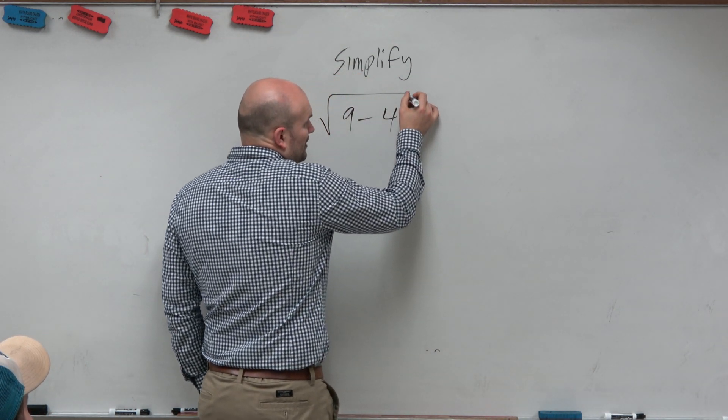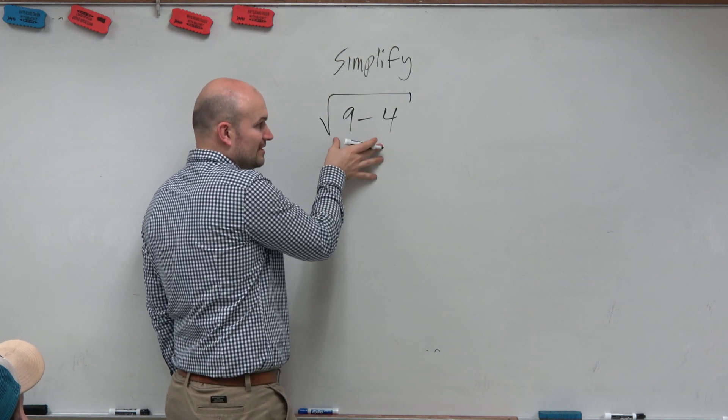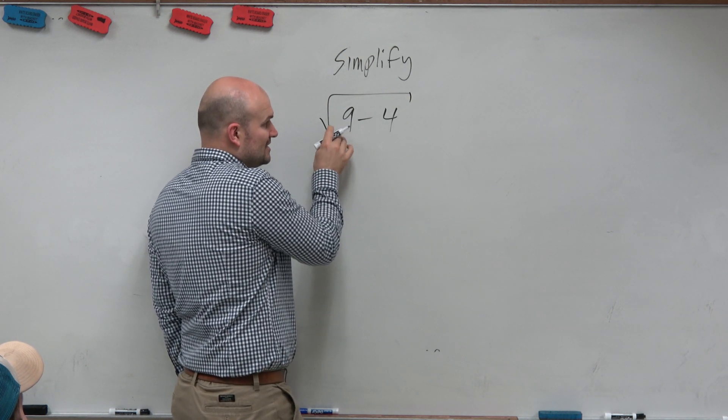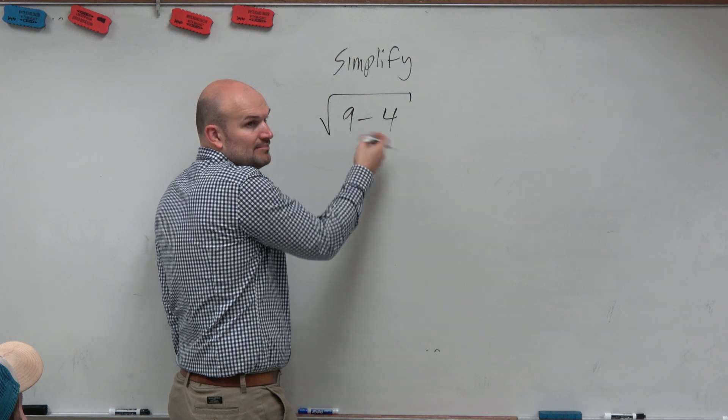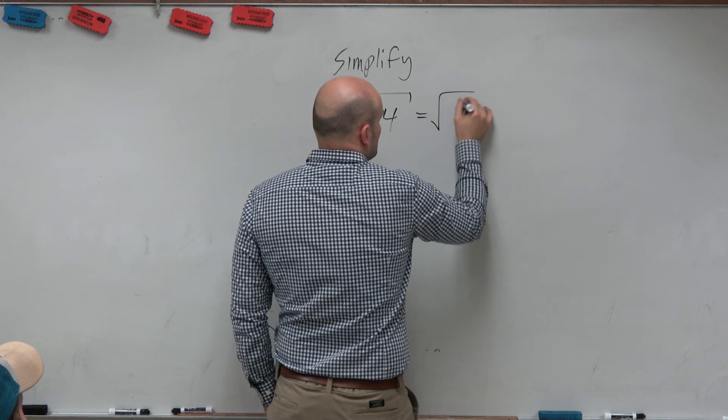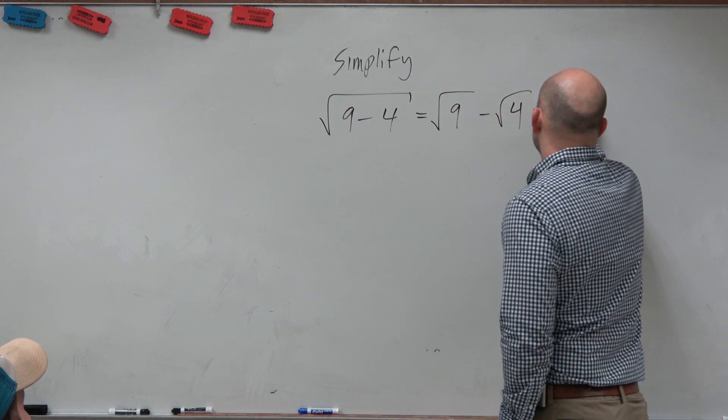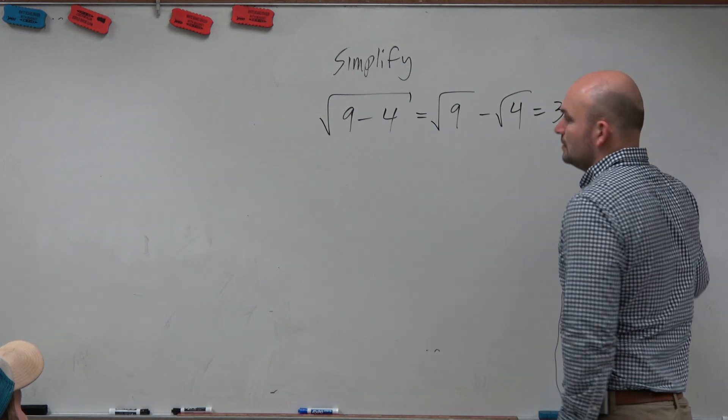But one of the major mistakes that I see a lot of students come in with this problem is they see the square root, and they see 9 and 4, and they immediately want to split it up. They can't do that.